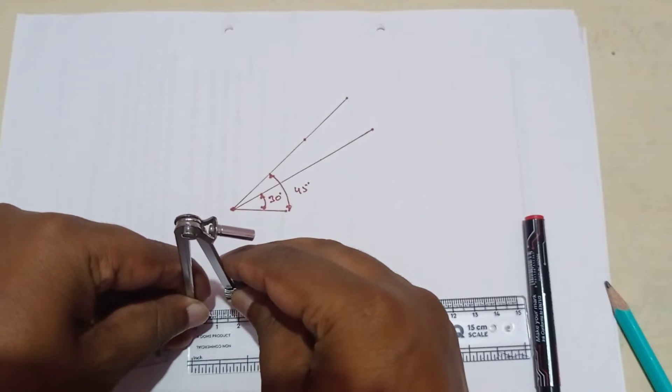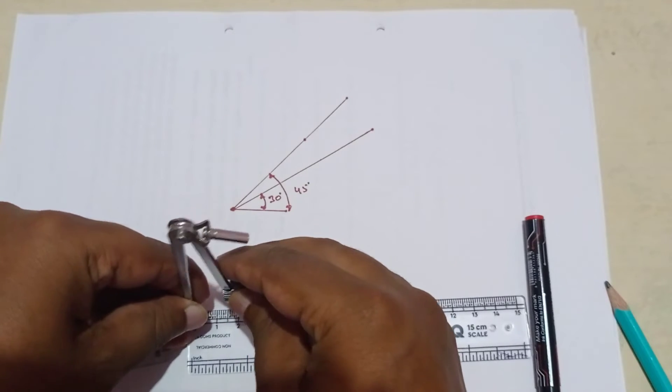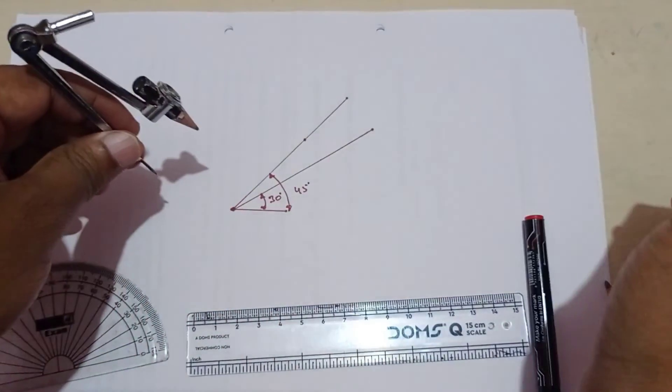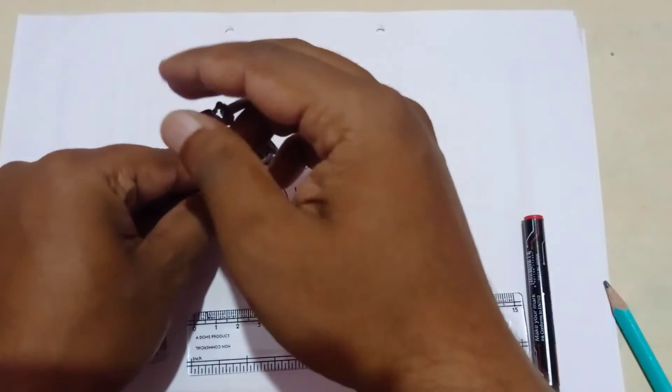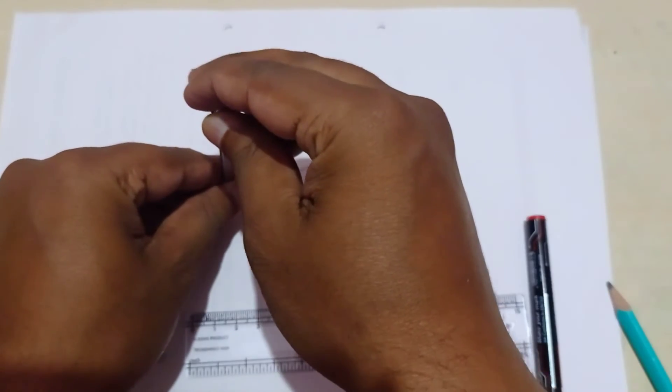So what you have to do here is you have to cut an arc on the 45-degree angle line. So cut an arc on the 45-degree angle line.